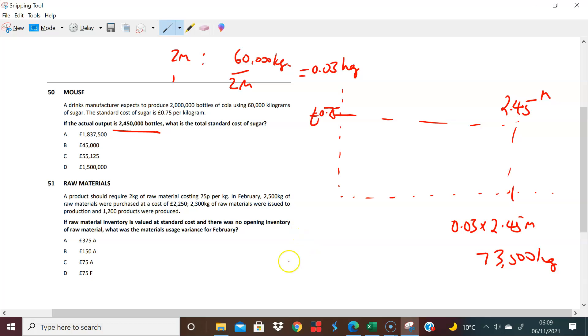But it's at 75 pence because that's the standard cost. So I need to go 73,500 times 75 pence, and that comes to 55,125. So that's £55,125.